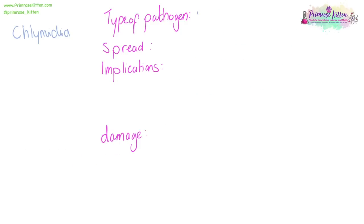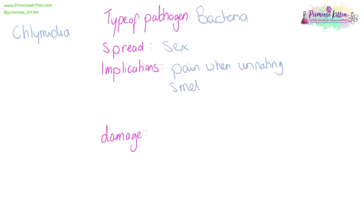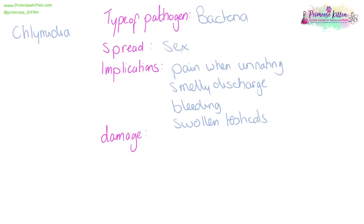Chlamydia is a bacterium spread via unprotected sex. It is one of the most common sexually transmitted infections in the UK — about 200,000 people test positive in England each year, and 70% of those are under 25. Implications include pain when urinating, discharge from the penis, anus, or vagina, bleeding between periods, and swollen testicles. The damage can be long-term and lead to infertility. The best prevention is to use a condom.